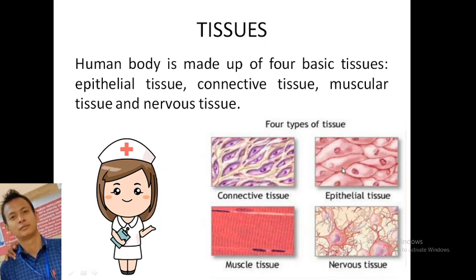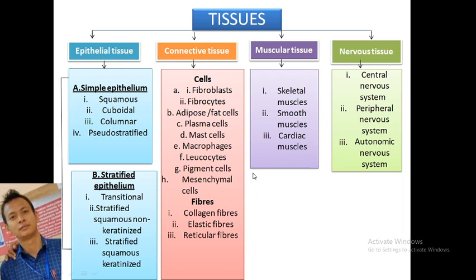Looking at the pictures, connective tissue has a different appearance from epithelium tissue. You can see the nucleus in the pictures. All four types have different pictures and different nuclei, so we need to identify them when we observe under the microscope after training.